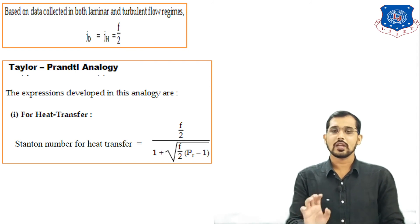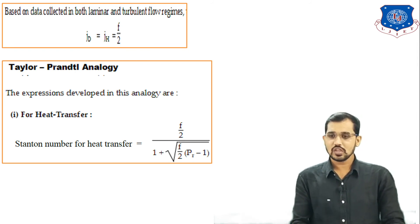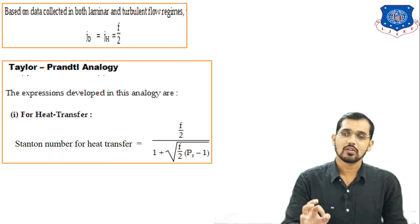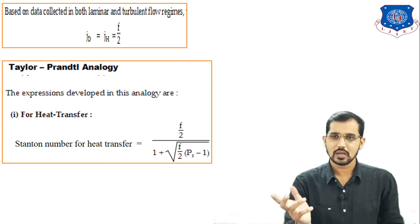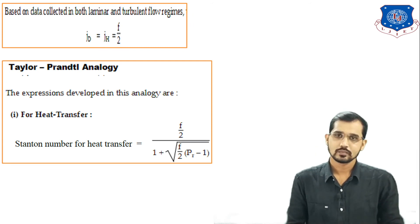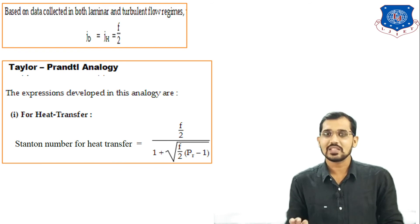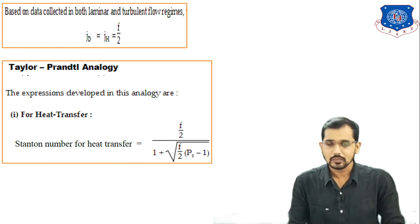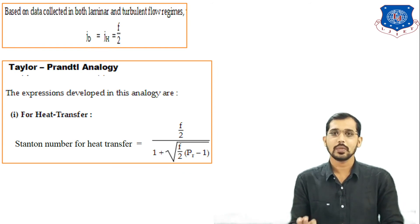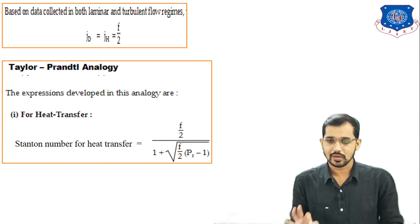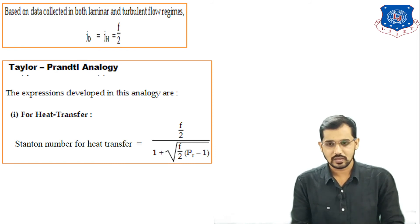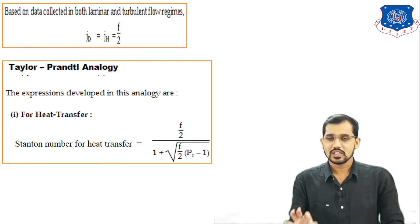The next analogy is the Taylor-Prandtl analogy. The expression developed for heat transfer is the Stanton number for heat transfer equals: f/2 divided by [1 + √(f/2)·(Pr − 1)], where f is the friction factor and Pr is the Prandtl number. This is a very important relation that must be remembered as written.